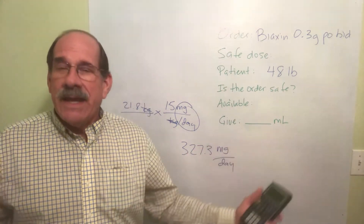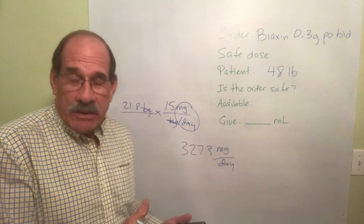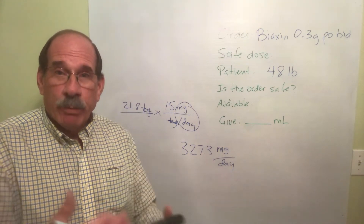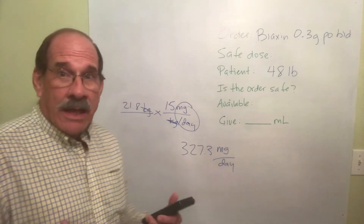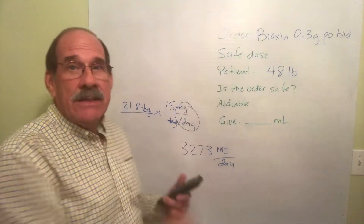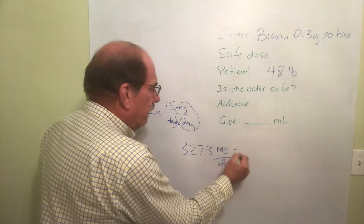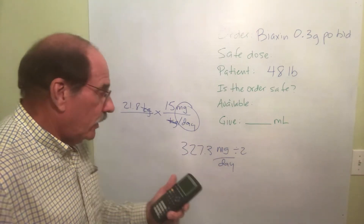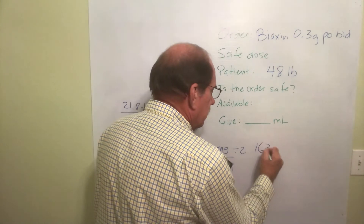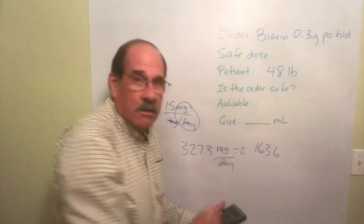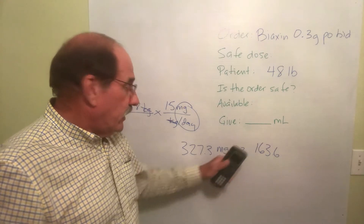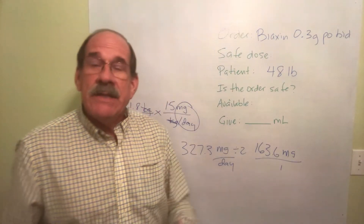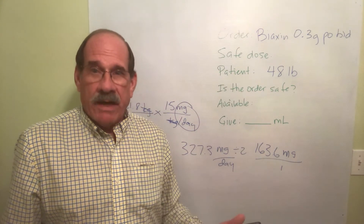That's how much for the whole day I can safely give my little 48-pound patient. I still need to know how much is a safe amount per dose, in divided doses. How many times a day will I give this? BID means twice a day, so I now divide this number by 2. Divide by 2, and that's 163.6 — it goes on and on. Because I divided by 2 times a day, that's just milligrams — the number of milligrams that is safe per divided dose.